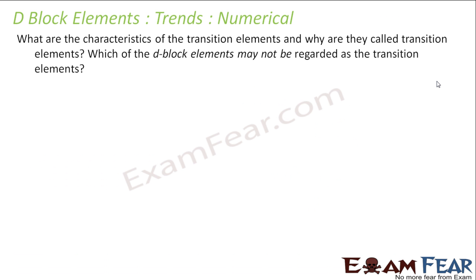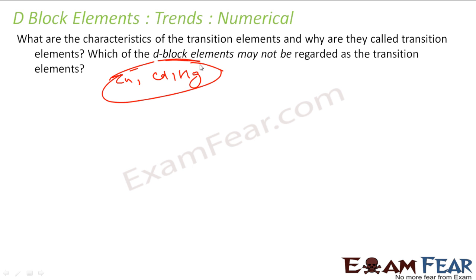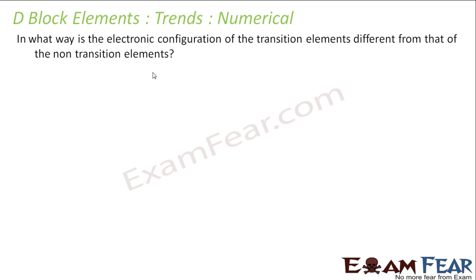What are the characteristics of transition elements, and why are they called transition elements? Which d-block elements are not regarded as transition elements? Transition elements are those which have partially filled d orbitals in their stable elemental or ionic form. They are called transition metals because they transition between the s-and-p block metals and non-metals. Zinc, cadmium, and mercury are d-block elements but are not called transition metals because their d orbitals are completely filled in both elemental and oxidized states.